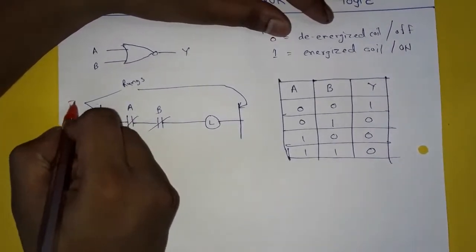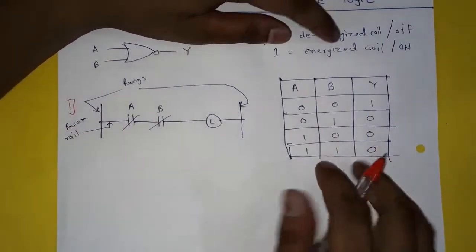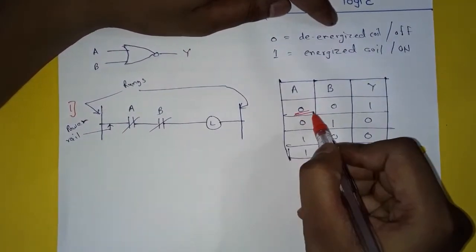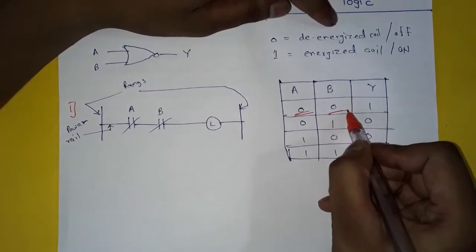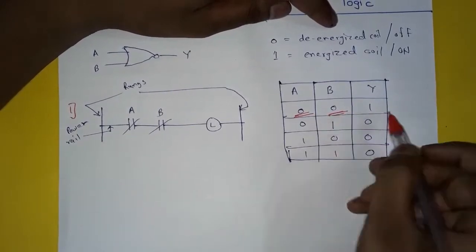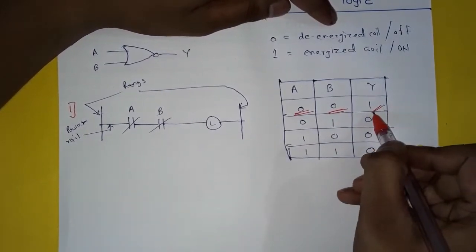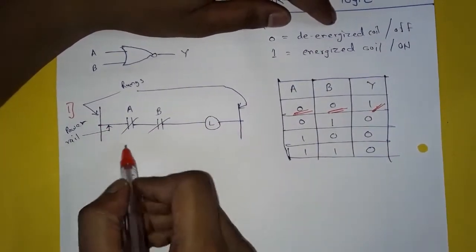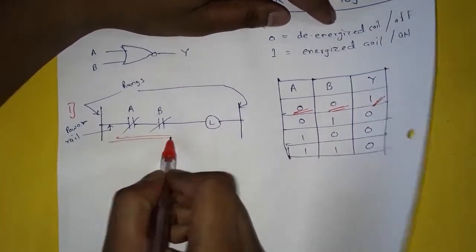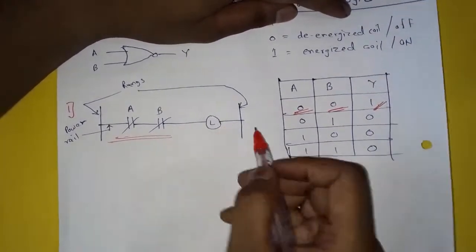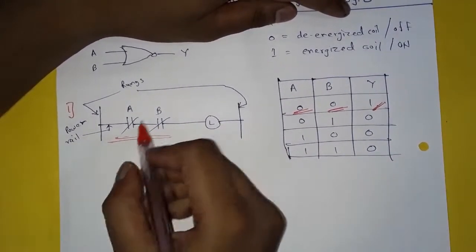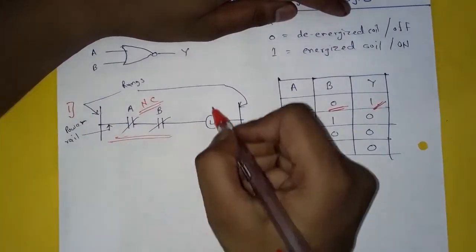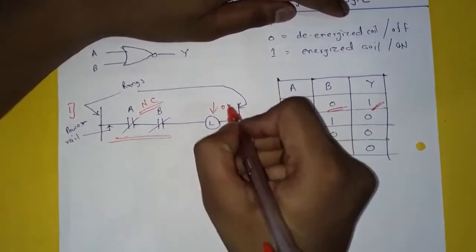In the first condition, A is de-energized, that is off, and B is also de-energized, that is also off. So the output — the lamp will glow. Because both switches are de-energized, they remain in normally closed position, so the lamp will glow. That is on.